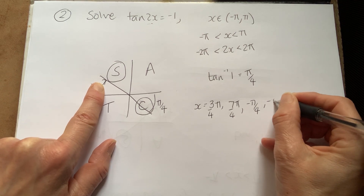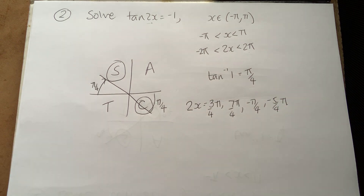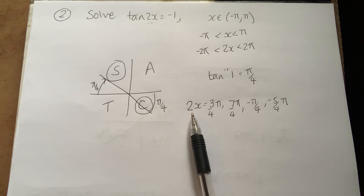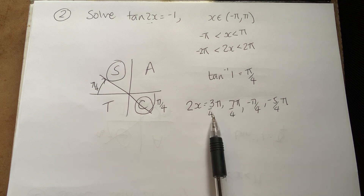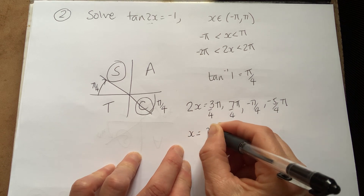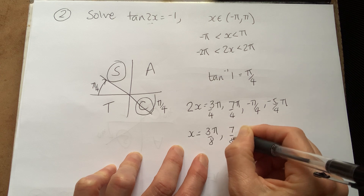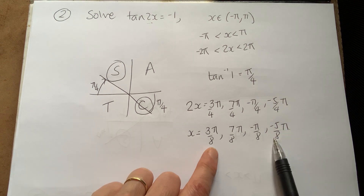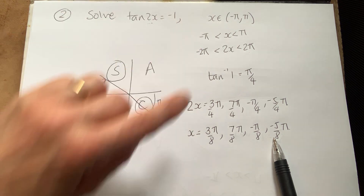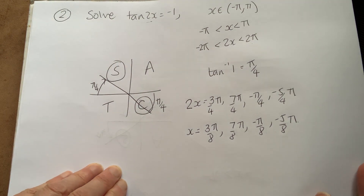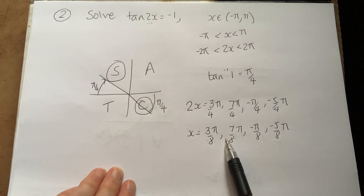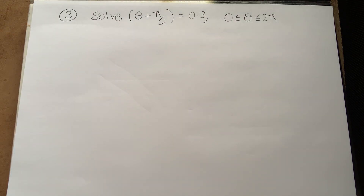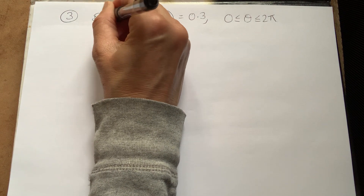Those are the solutions for 2x. Dividing all through by 2 gives the solutions for x: 3π/8, 7π/8, −π/8, and −5π/8. All of these lie within the required range. You can verify each one by finding tan of double the angle and checking it equals −1.